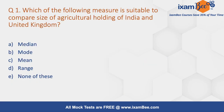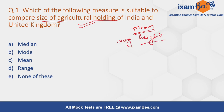Question 1: Which of the following measures is suitable to compare the size of agricultural holding of India and UK? The most common reply for these types of questions is mean, because when we talk about average holding size, we think mean represents the average. But that is not the case here. When we talk about average size of land holding or average height, it is not the mean but the mode that represents the average. Mode is the most frequently occurring number, so the answer here is mode, not mean.